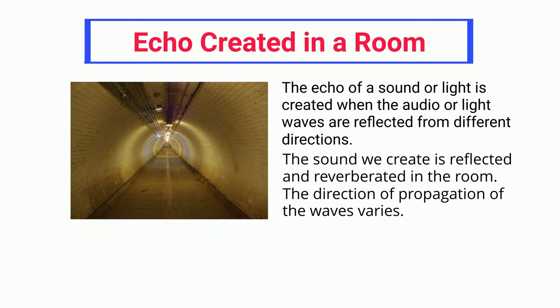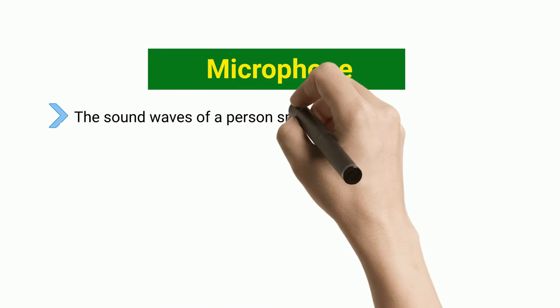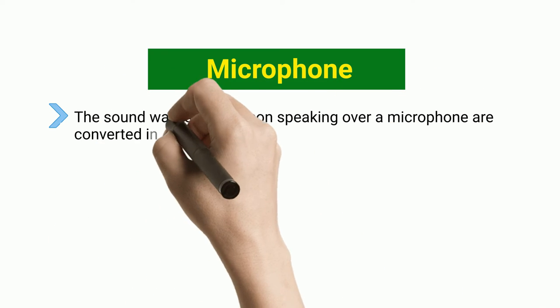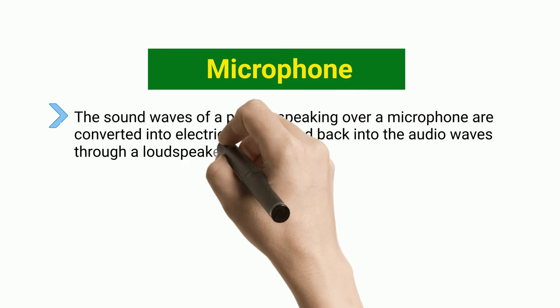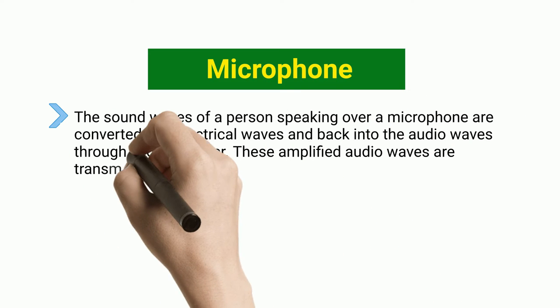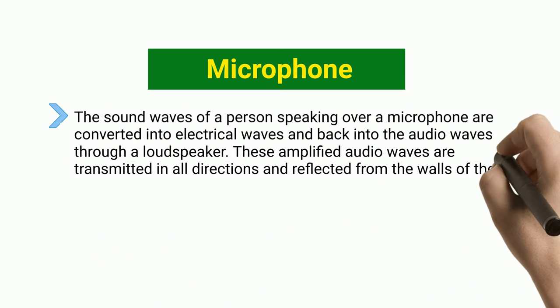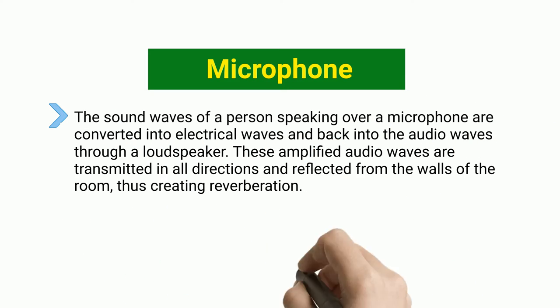Microphone: The sound waves of a person speaking over a microphone are converted into electrical waves and back into audio waves through a loudspeaker. These amplified audio waves are transmitted in all directions and reflected from the walls of the room, thus creating reverberation.